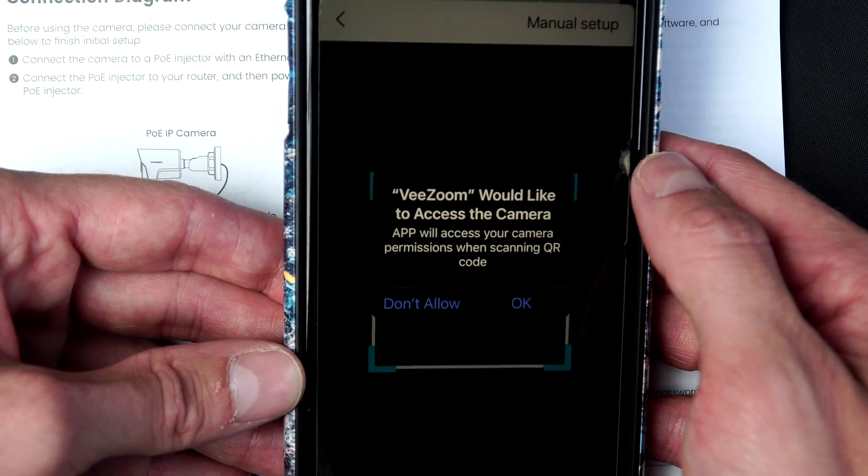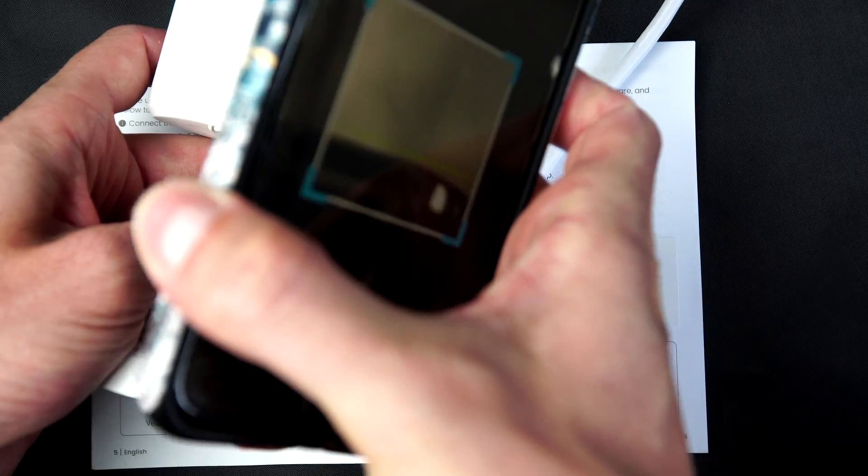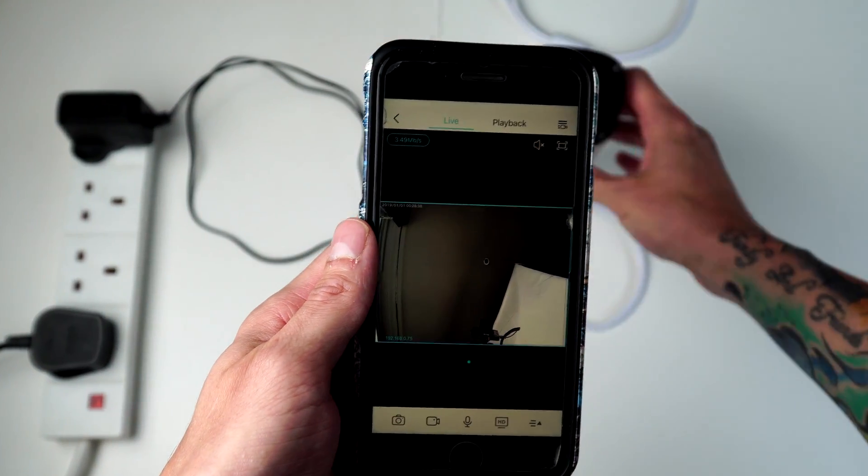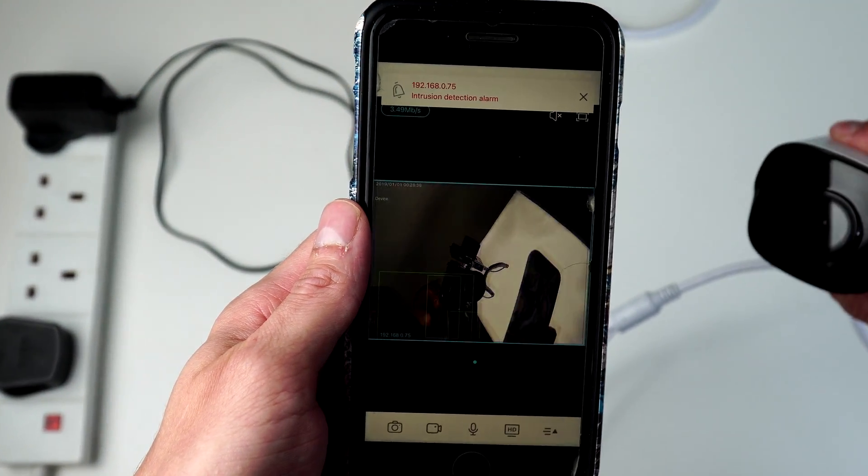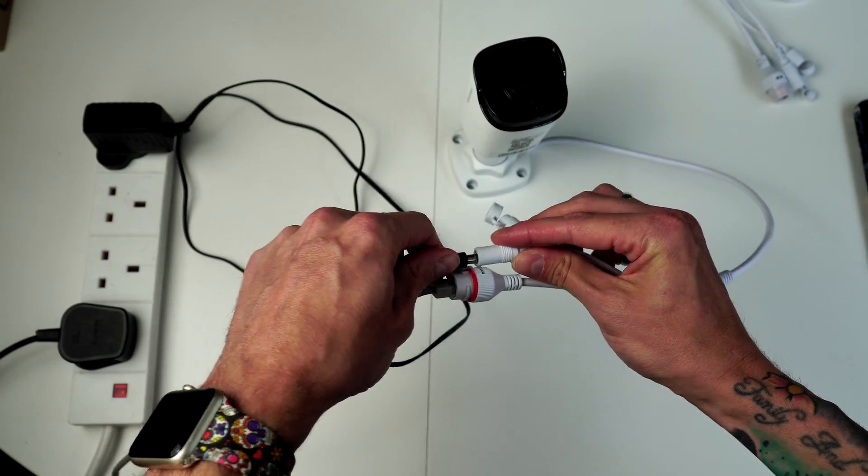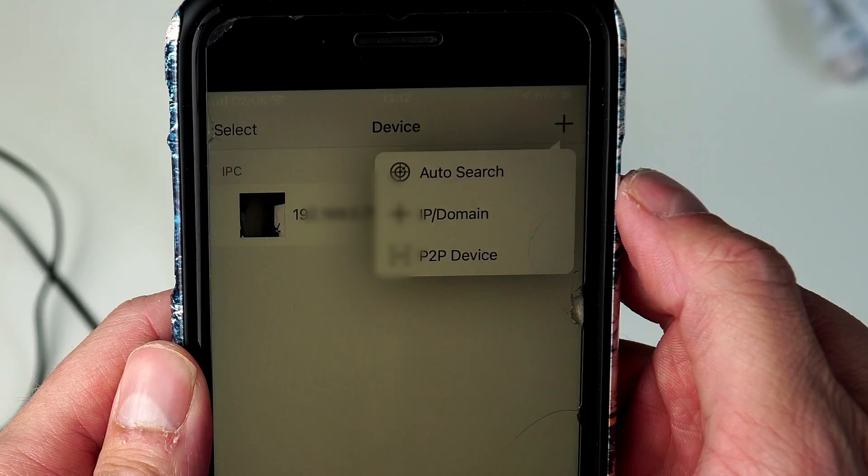Now we're going to look to add a camera. Make sure you pick P2P device, allowing us to scan the QR code on the camera. Now we have one of the cameras connected to the app. And straight away I was getting notifications for the motion detection. Now I'm going to plug in the second camera and set this one up as well to the app.